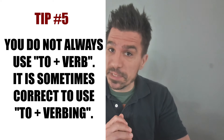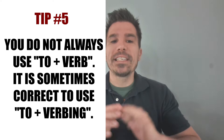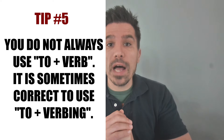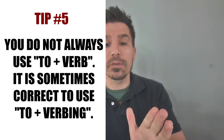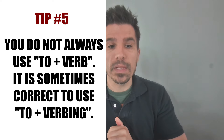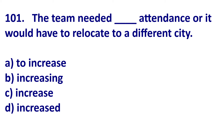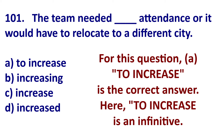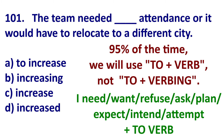Tip five: you will not always use 'to + base verb.' Sometimes it is okay to use 'to + verb-ing.' Let's look at a TOEIC question: 'The team needed blank attendance, or it would have to relocate to a different city.' In this situation I would pick A — this is an infinitive verb. For example: 'I need, want, or have to verb' — that's called an infinitive.